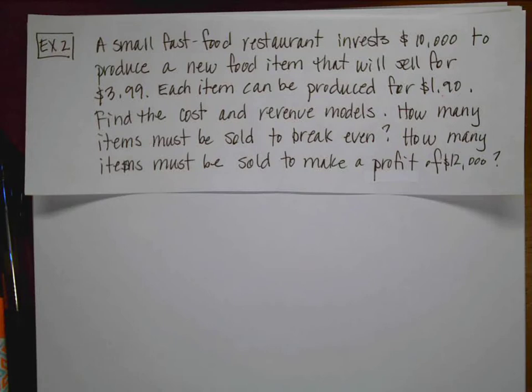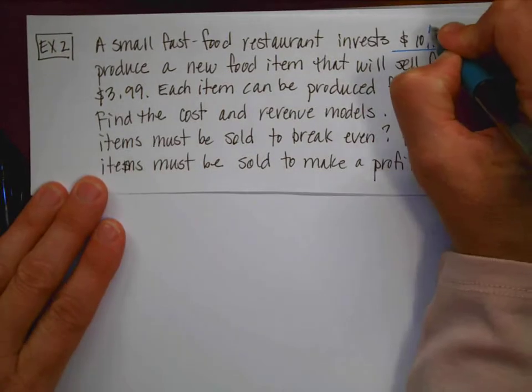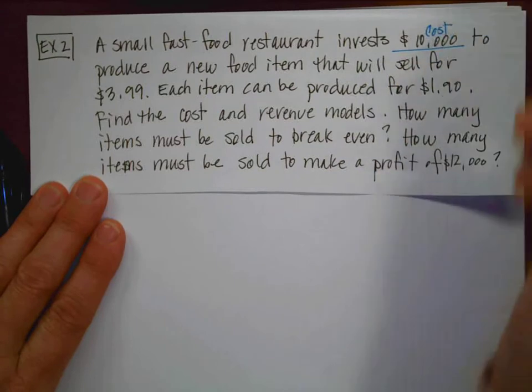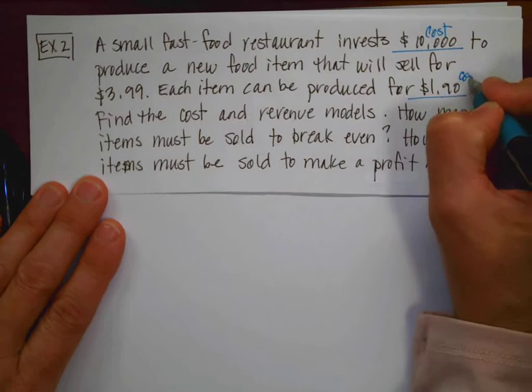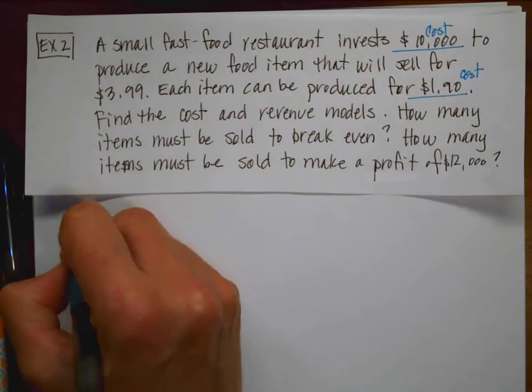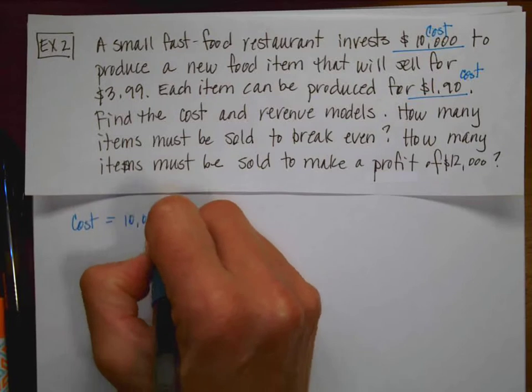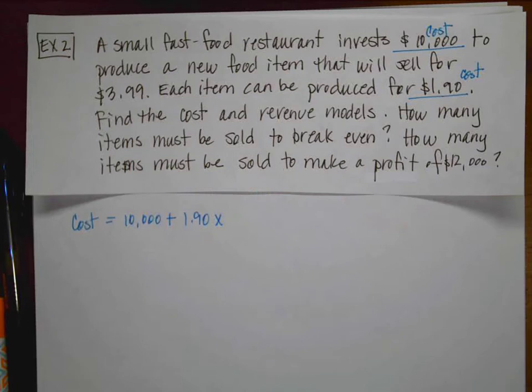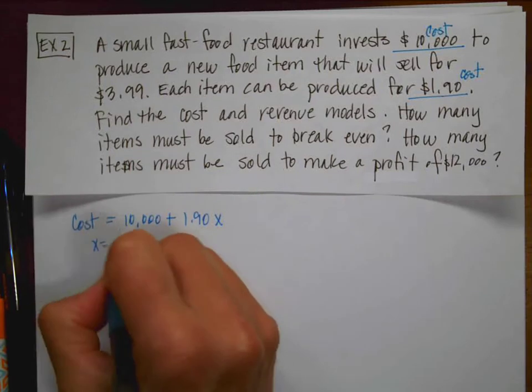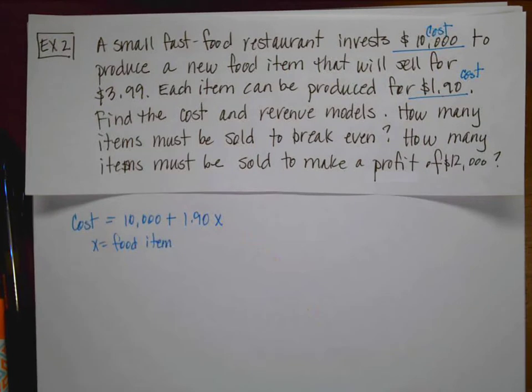So we're going to start this process exactly the same. So let's talk about the $10,000 is a cost. And it costs me $1.90. So my cost model is going to equal my initial outlay of cash plus however much it costs me to make a food item. And X is going to equal a food item, whatever that might happen to be.